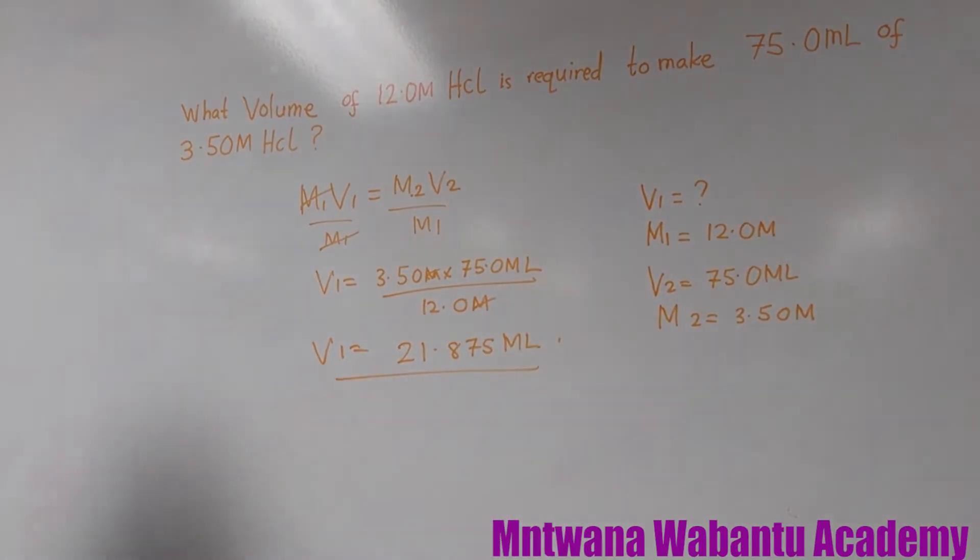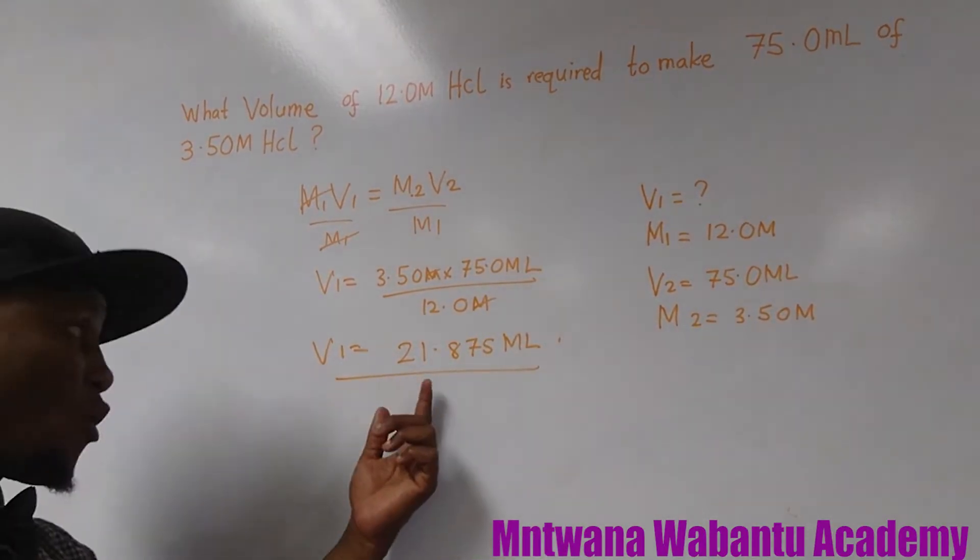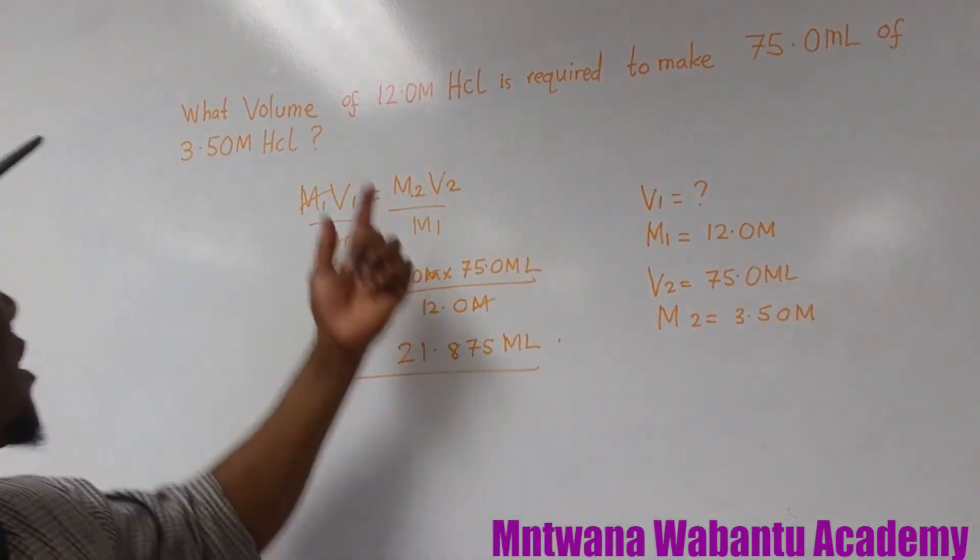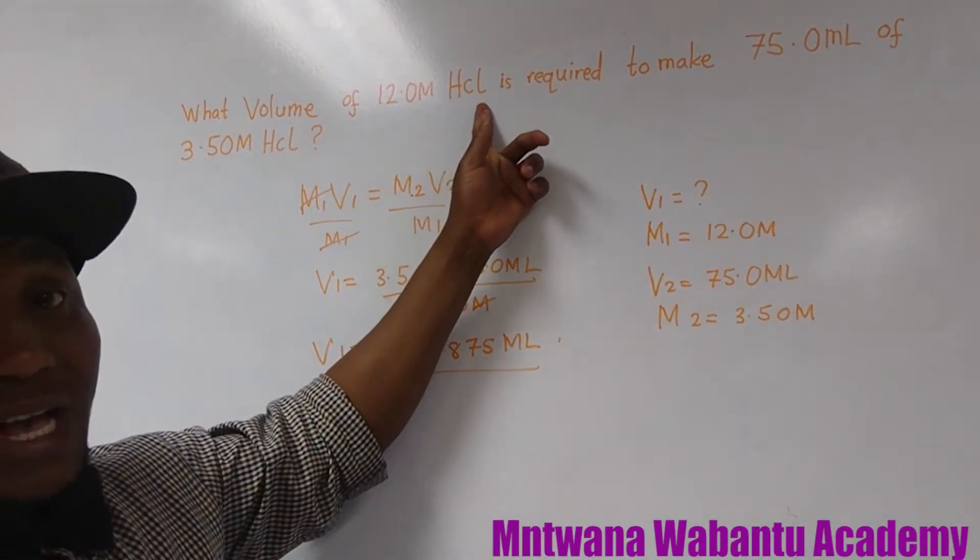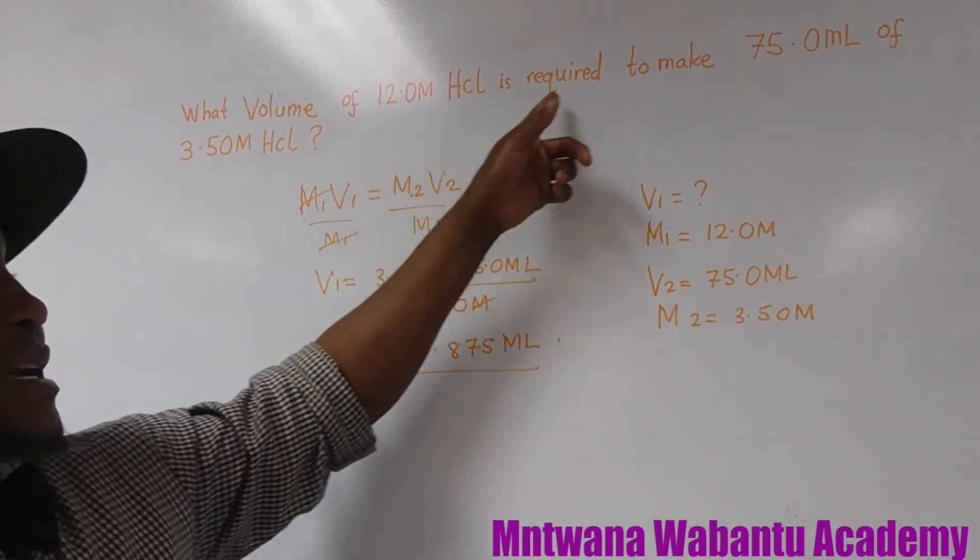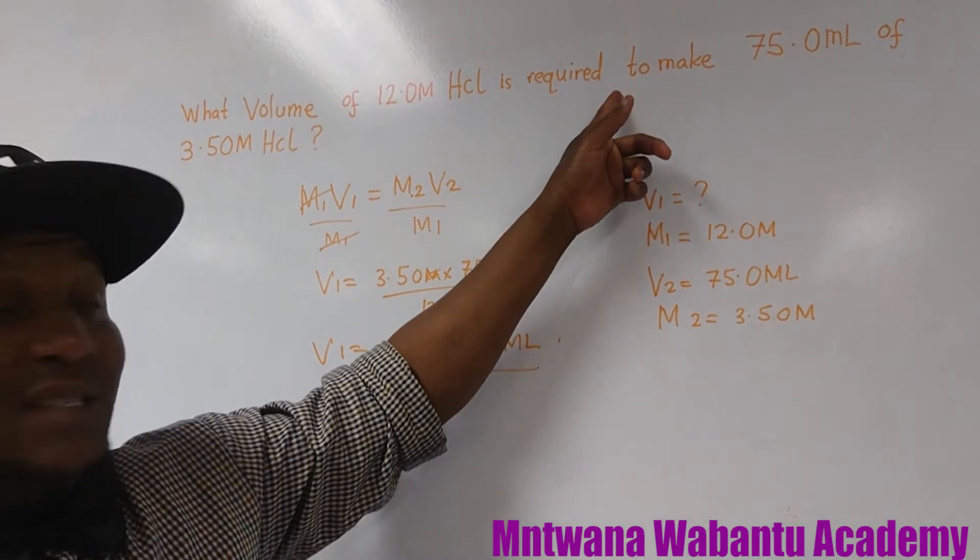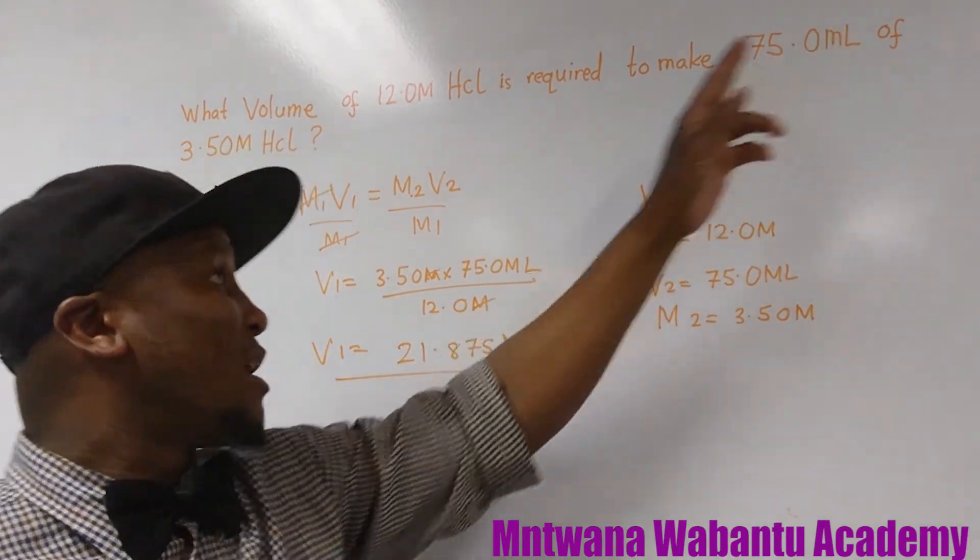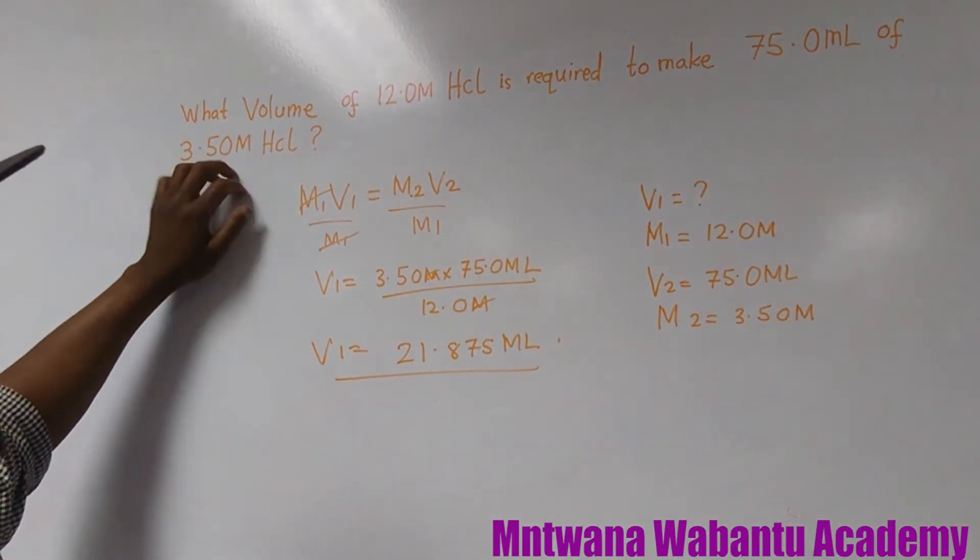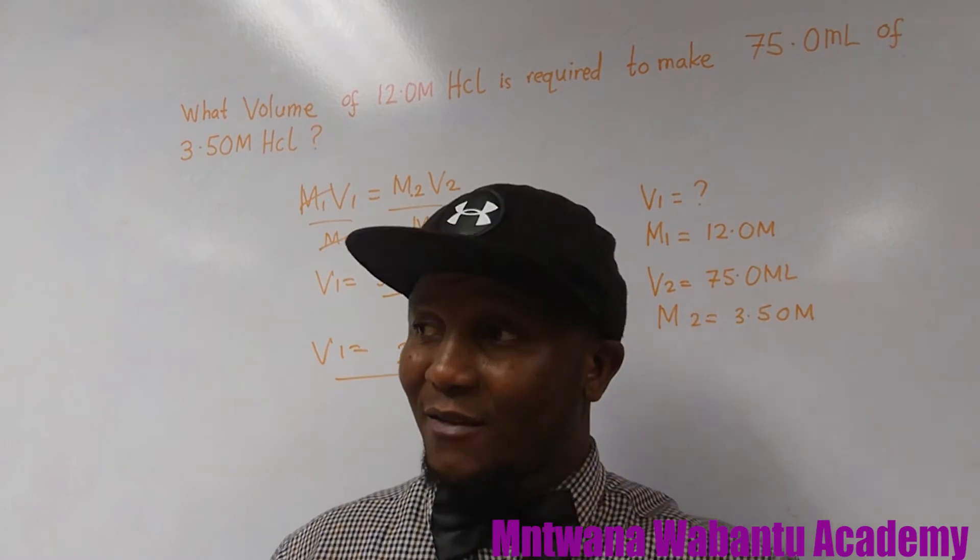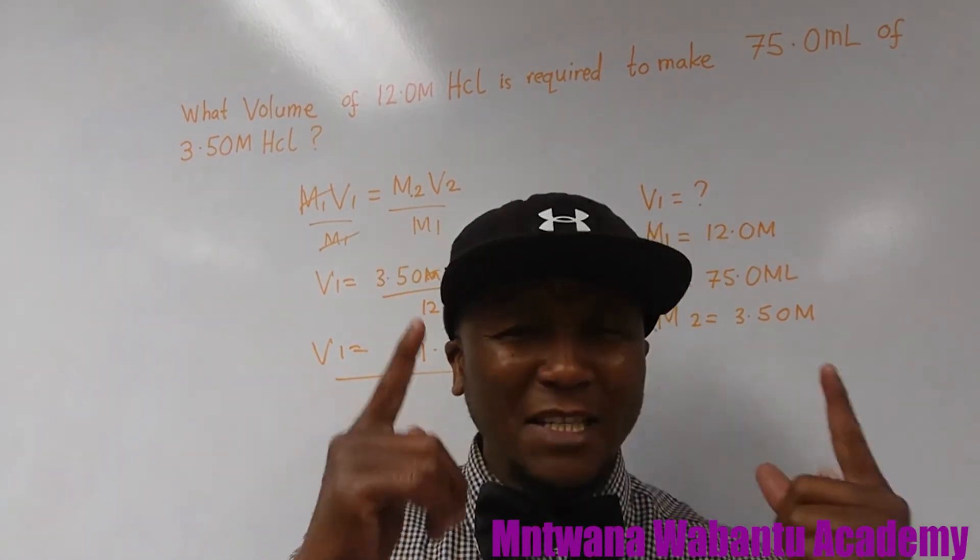So in other words, this volume V1, which is 21.875 milliliter of hydrochloric acid which has a molarity of 12.0M, is required to make 75 milliliter of 3.50 molarity HCl. So if you have any questions, peace and love man, peace and love.